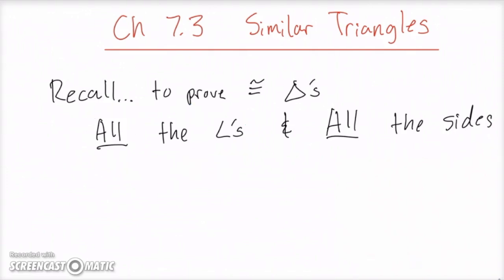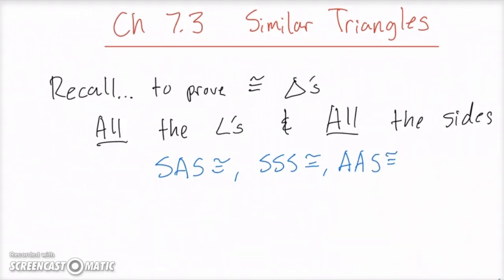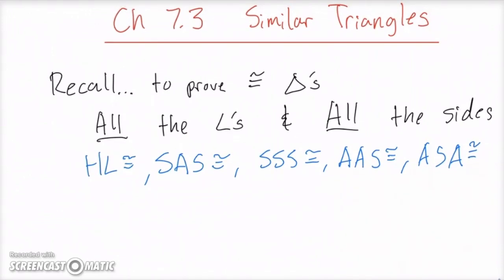But of course after that, we had some shortcuts — instead of proving all the angles and all the sides, we had our shortcuts: Side-Angle-Side congruence, Side-Side-Side congruence, Angle-Angle-Side congruence, Angle-Side-Angle congruence, and Hypotenuse-Leg. So we had these five shortcuts.